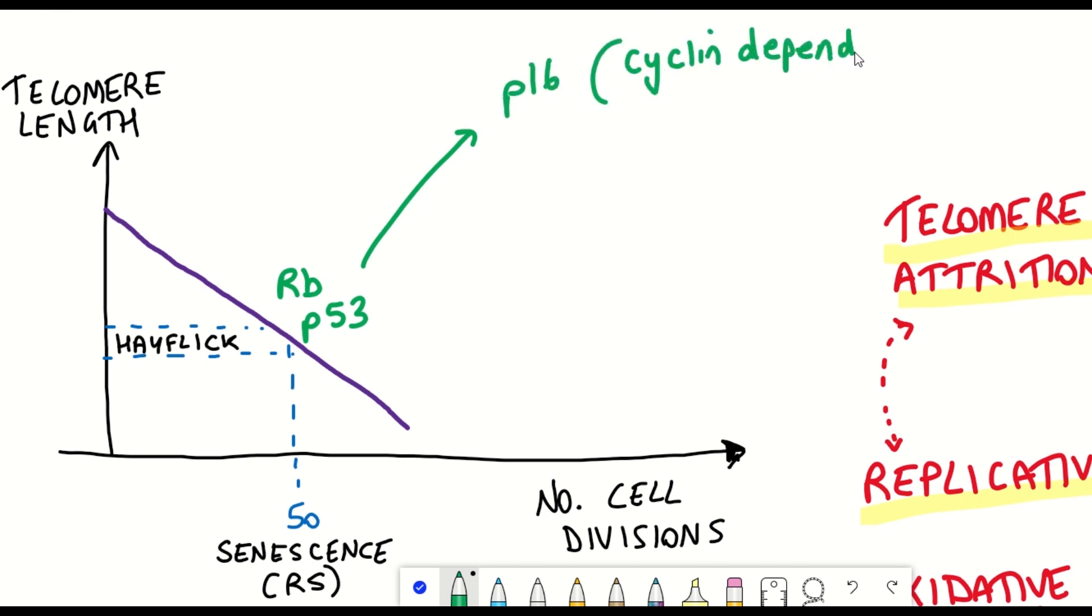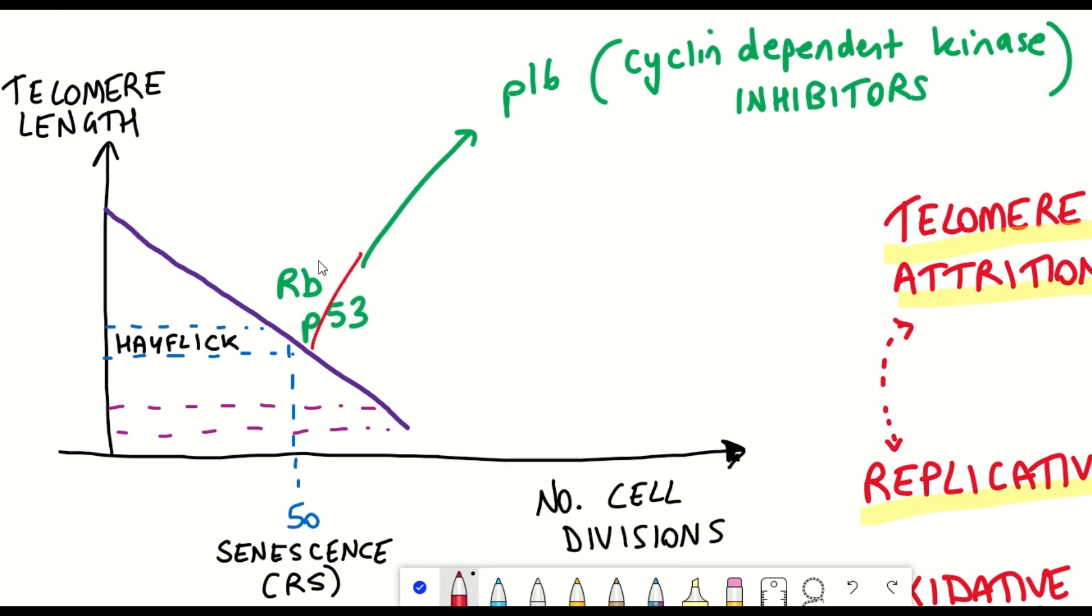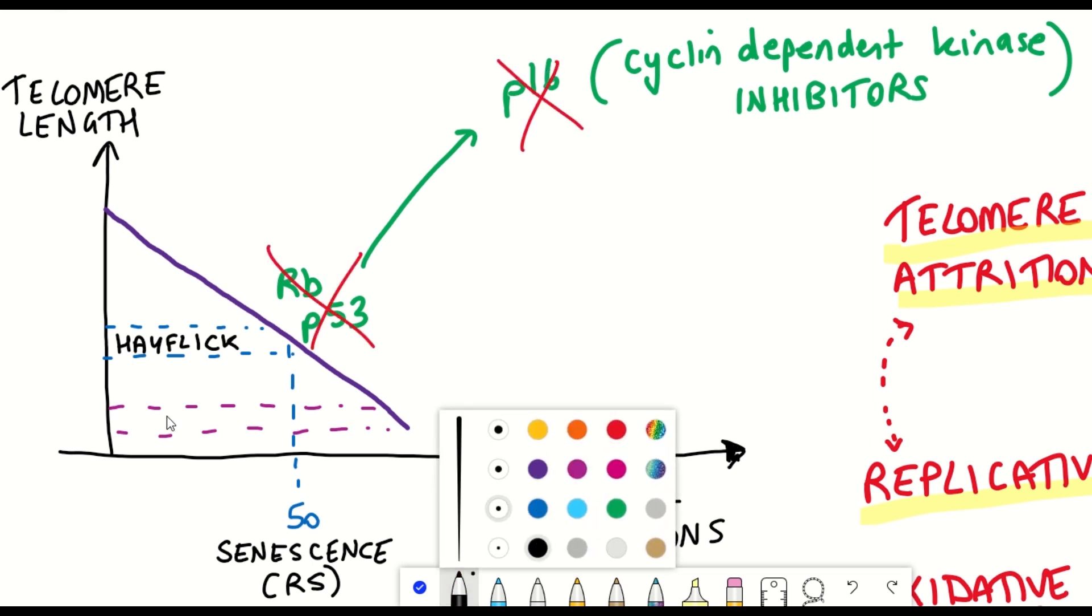Two pathways involved in this involve the protein P53 and retinoblastoma. And what these pathways do is they can activate proteins known as cyclin-dependent kinase inhibitors that help to prevent the cell cycle and they cause cell cycle arrest. And so one of these proteins is P16.